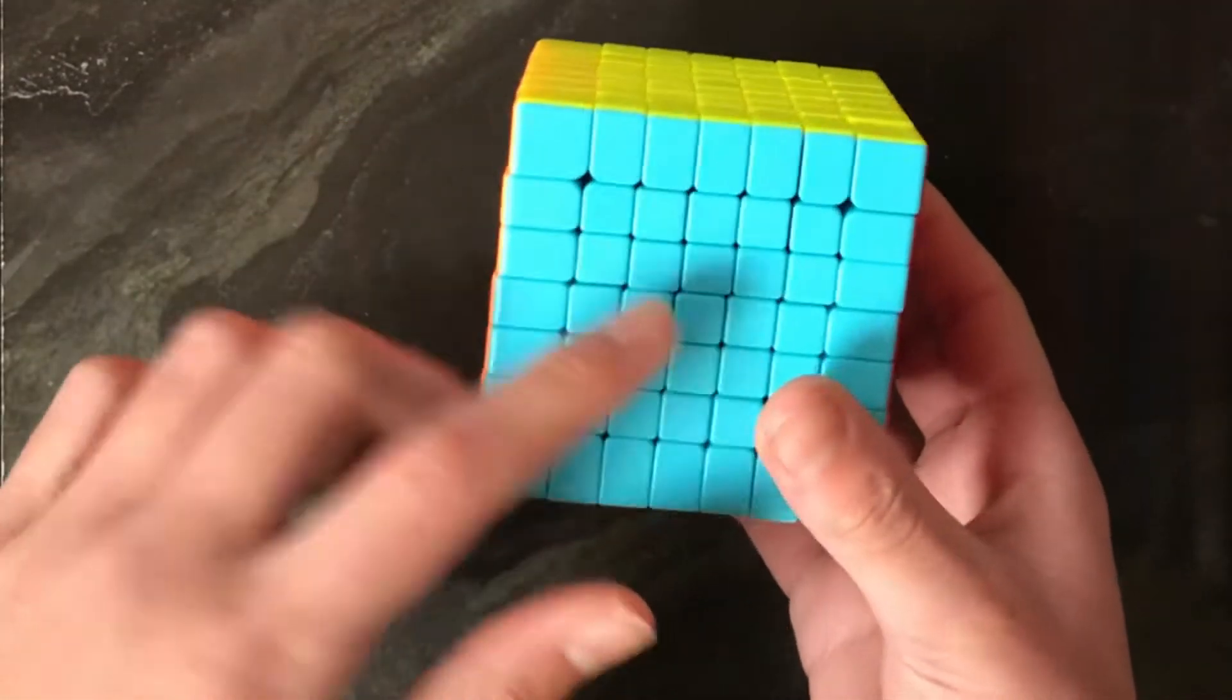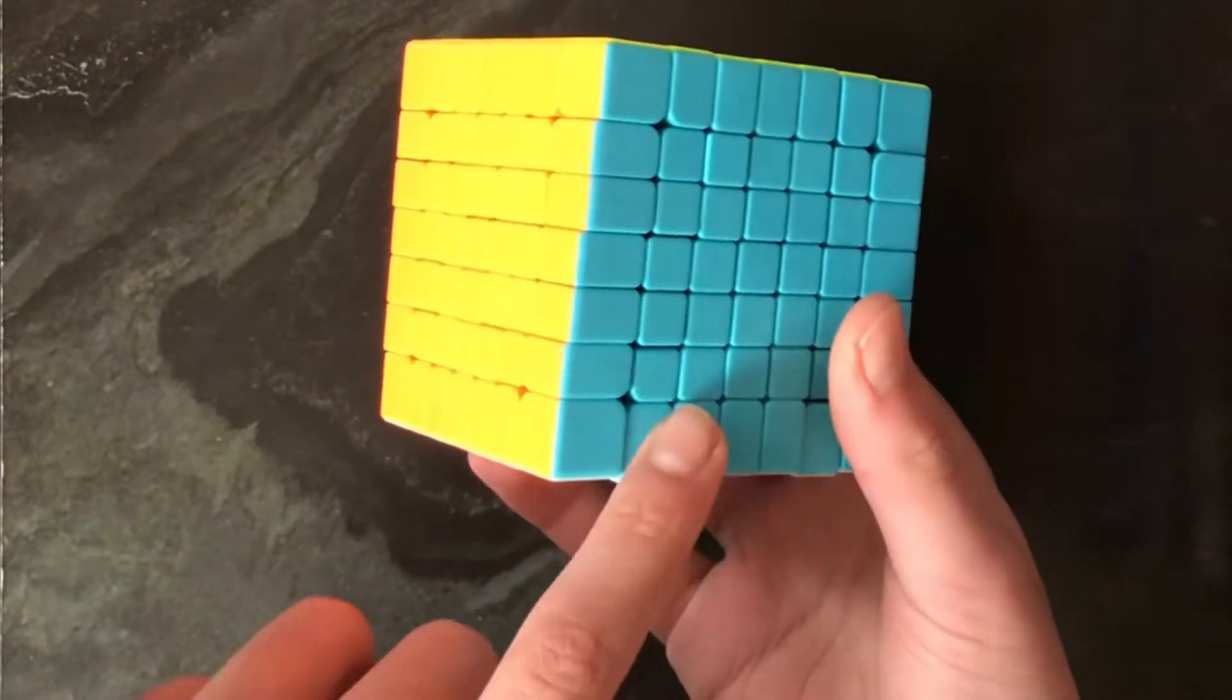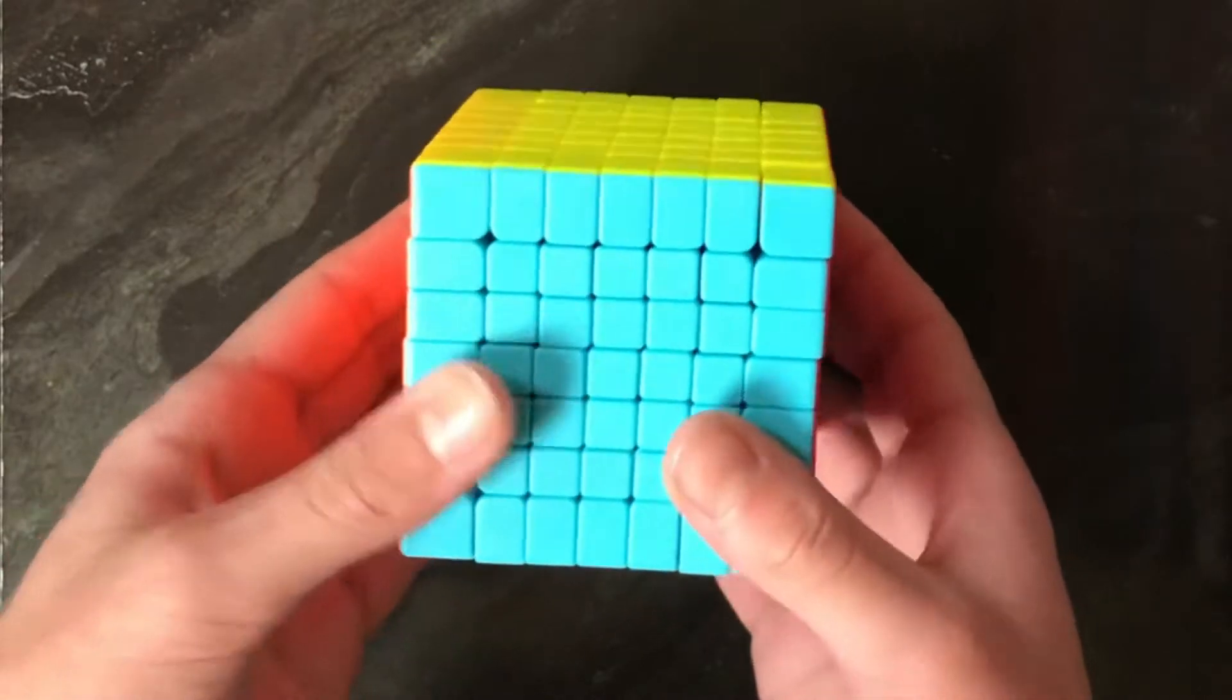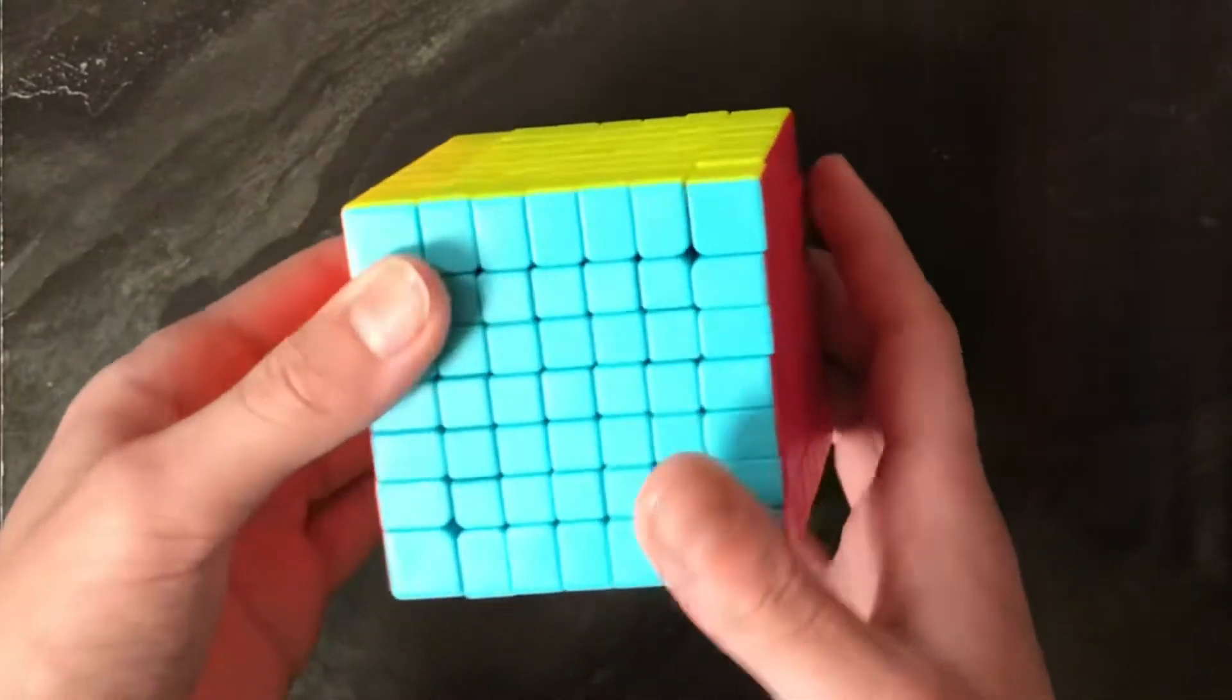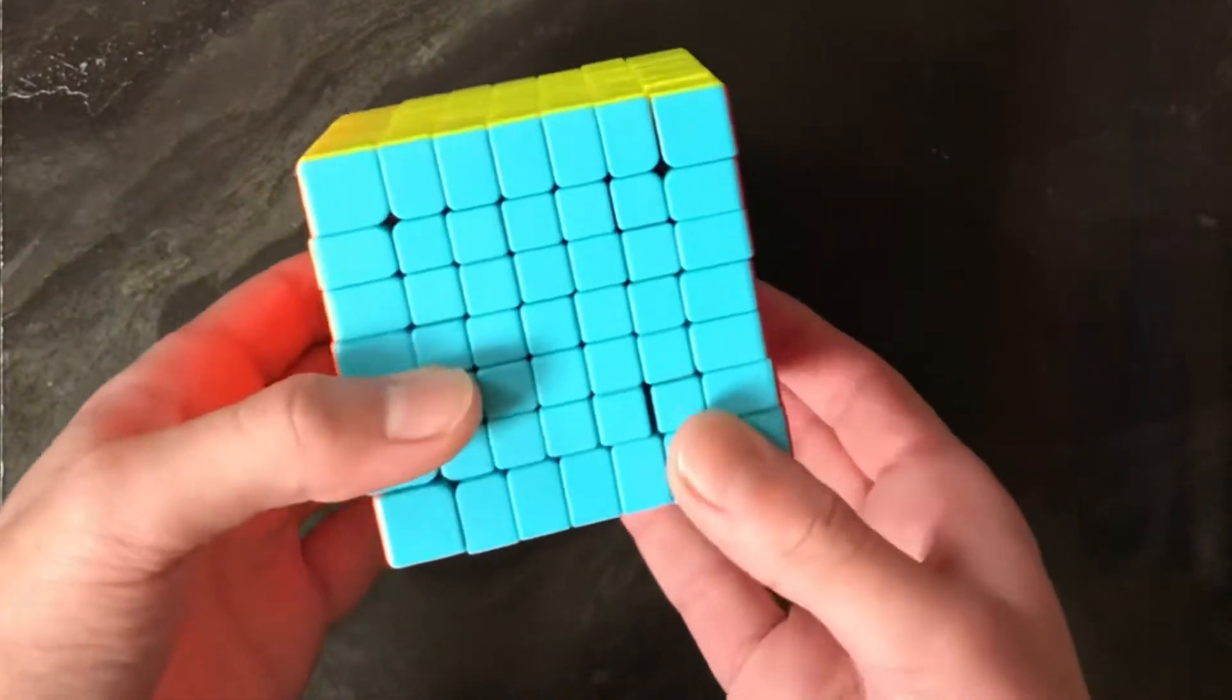Happy Valentine's everyone! In this video I'm going to be showing you how to make a heart on a 7x7. So let's get into it. The first thing we're going to do is create the bottom bit, which is going to be this piece on the inner.